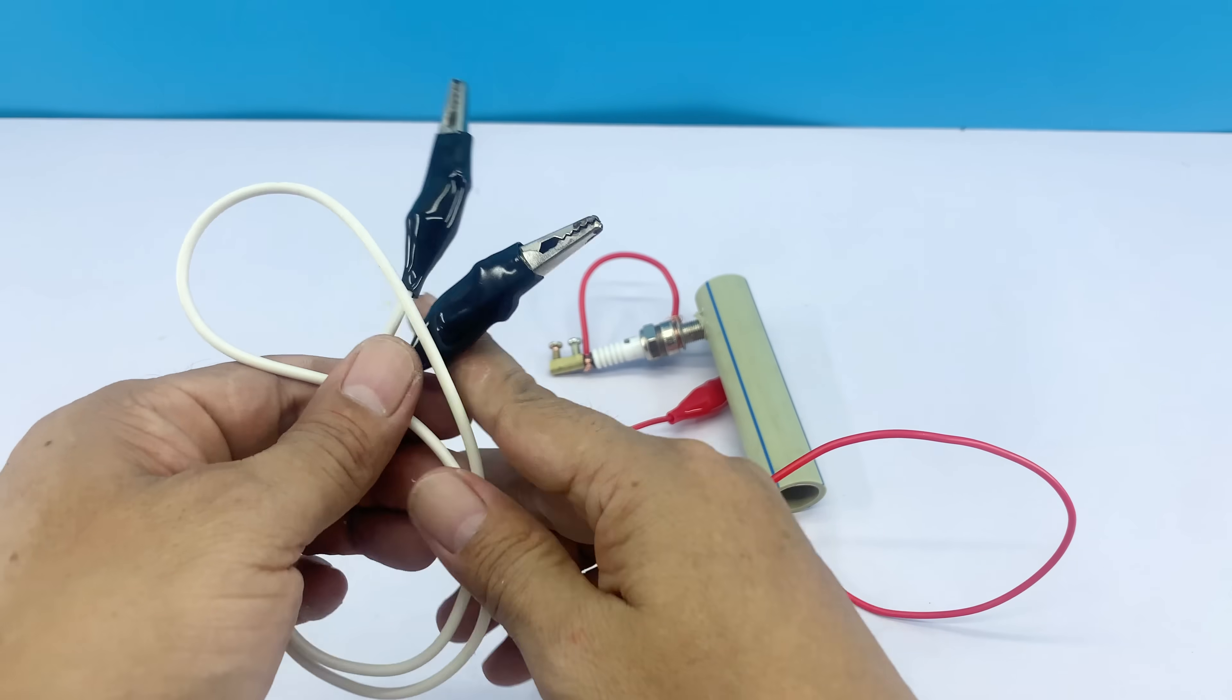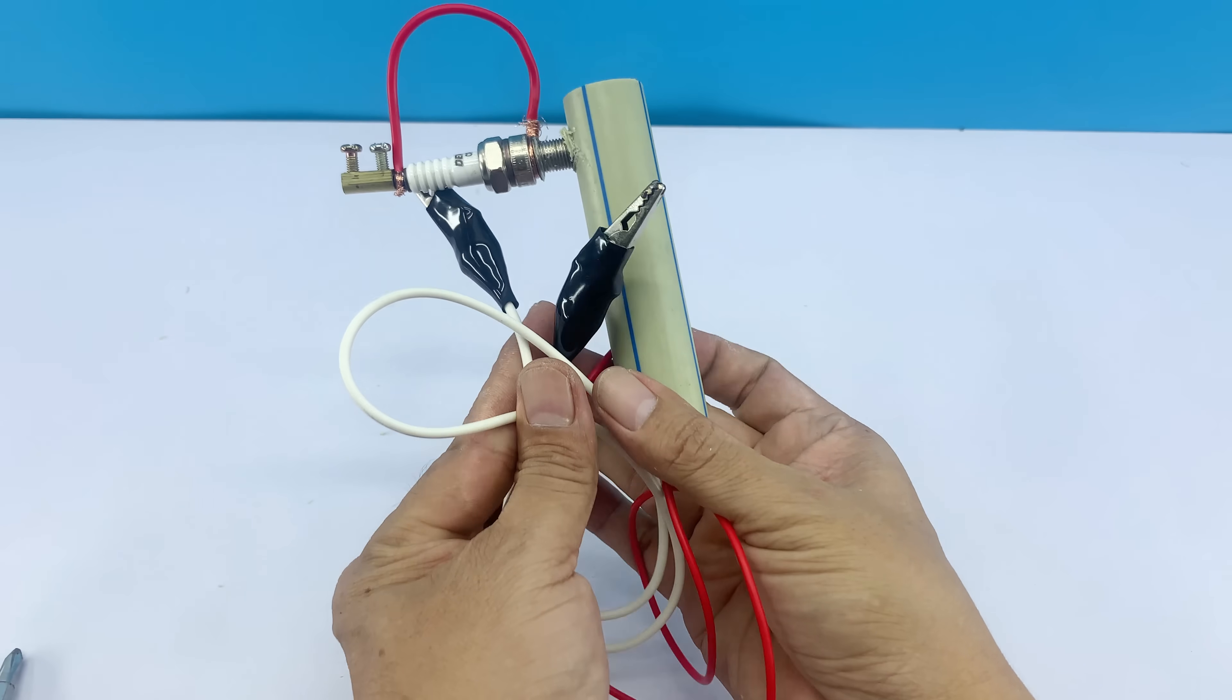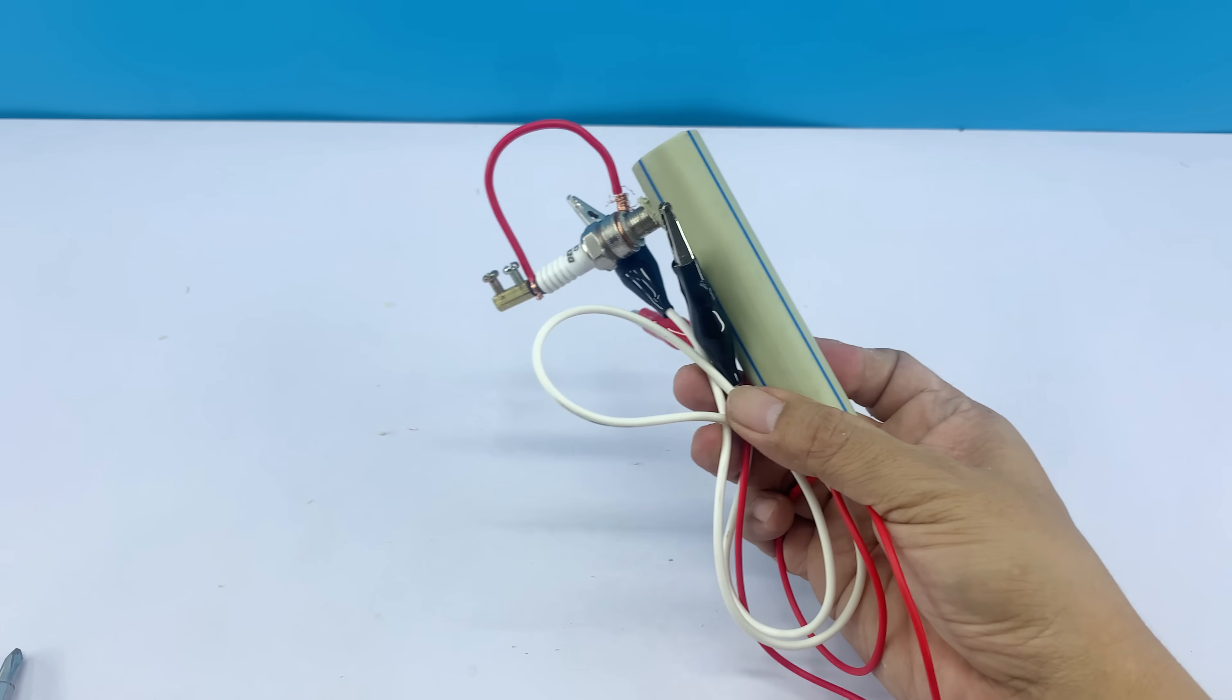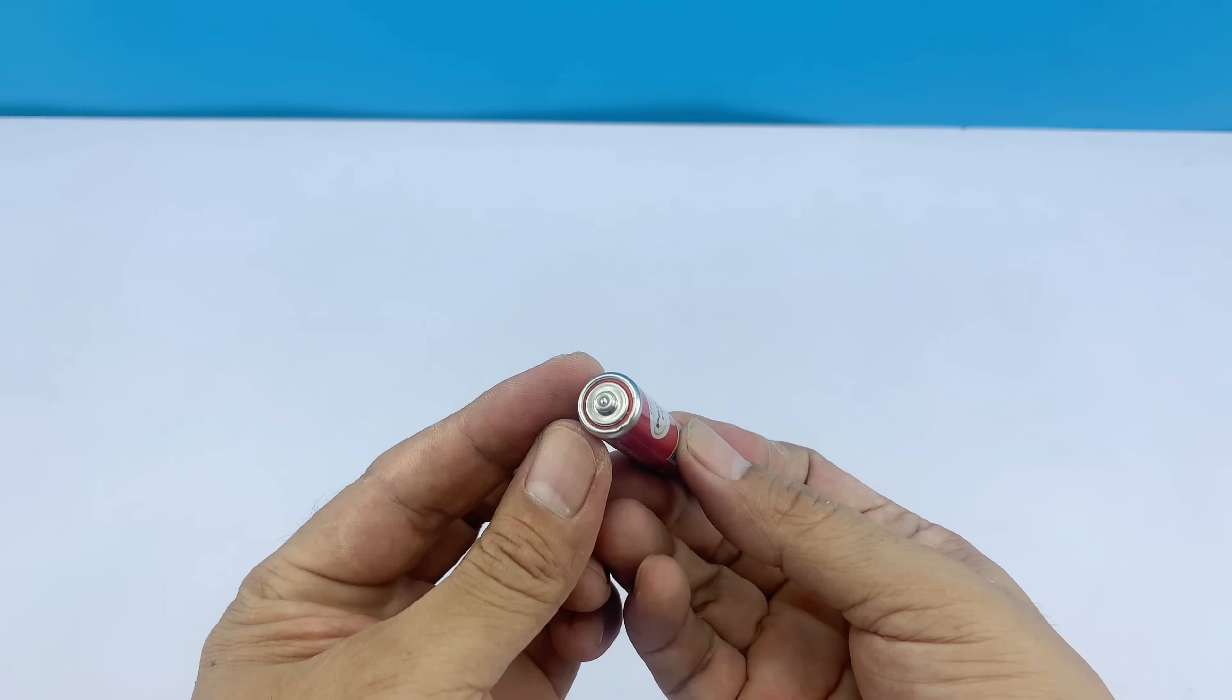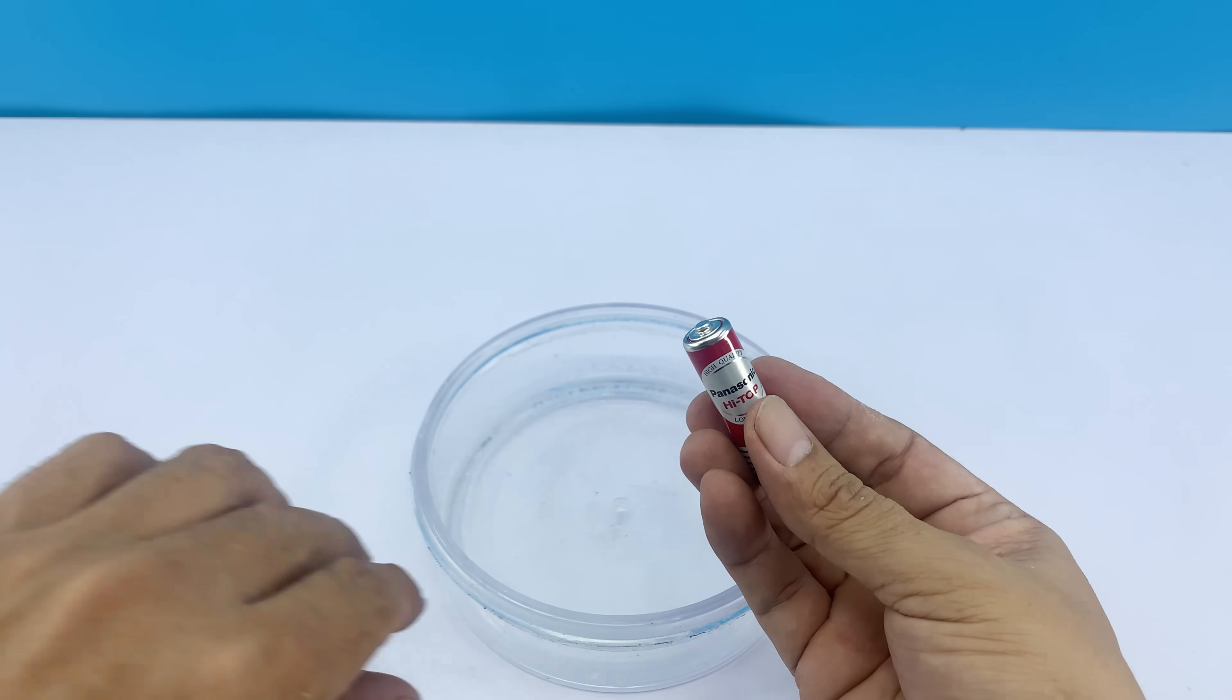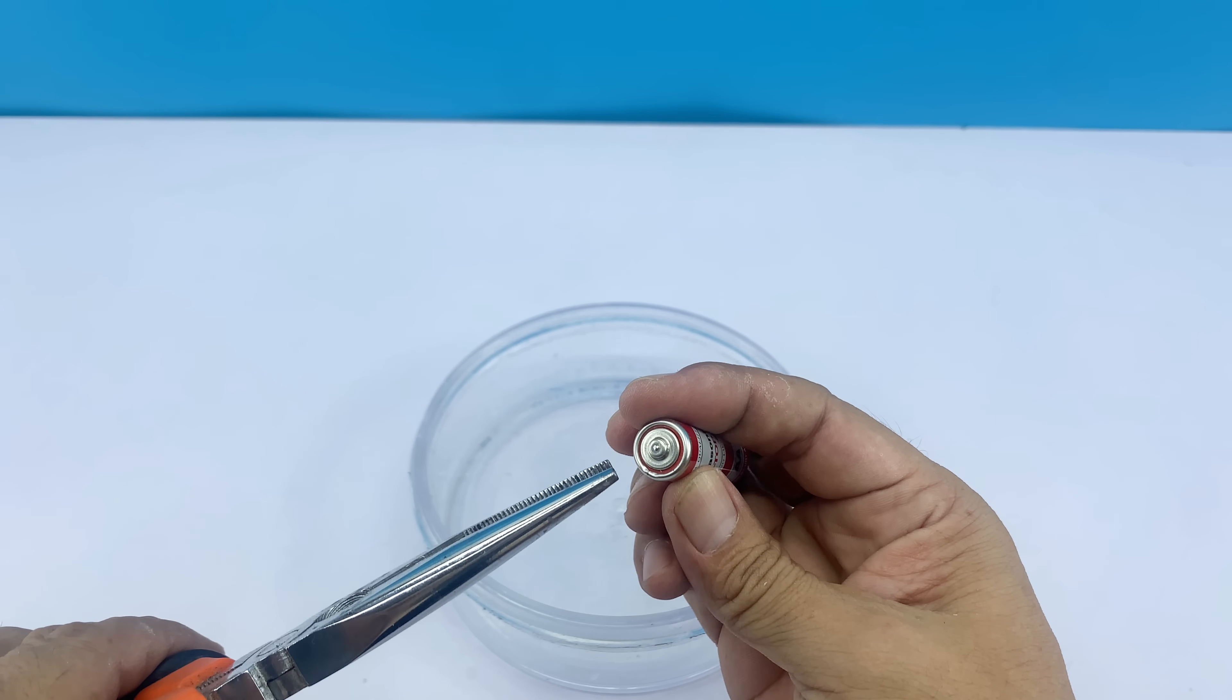To save time, I've already made a wire with both ends connected to two crocodile clips. At this step, I'll remove the core from the battery I'm holding to use it as the soldering tip for the handheld welding device.